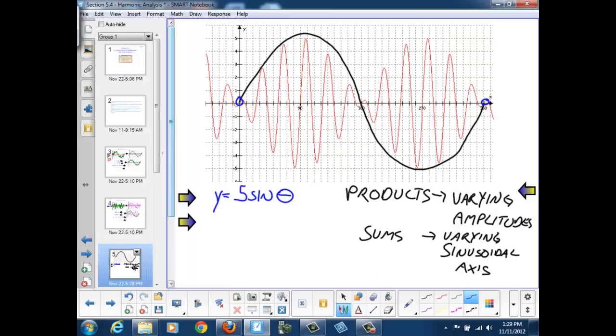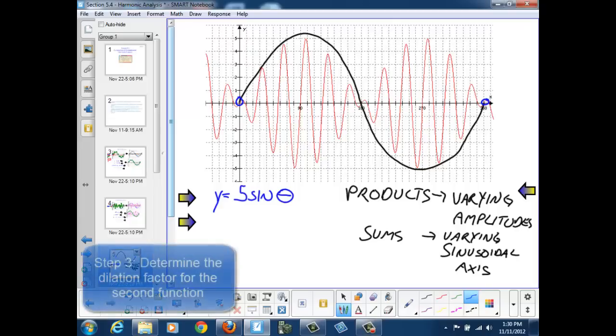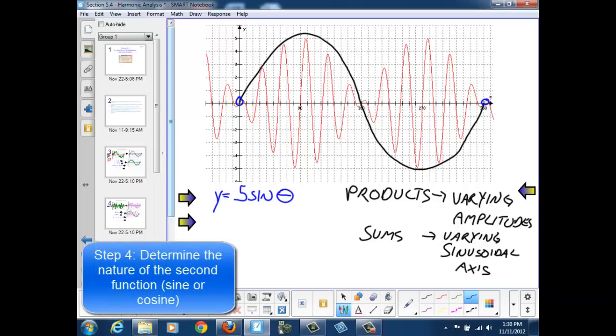Here we have two pieces of information that we want to focus on. First we need to figure out what the dilation factor is for my second function. How many cycles have we squeezed into this 360 degrees? And second we need to determine whether or not that second function is a sine or a cosine.